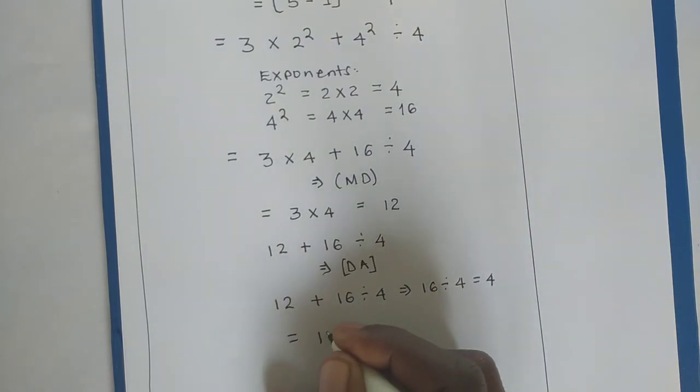So, now, finally, we shall have 12 plus 4, which will give us 16.